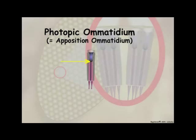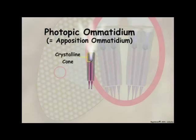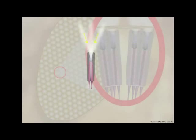In photopic ommatidia, incoming light is focused on the base of the crystalline cone and directly onto the rhabdom, the light-sensitive sensory region of the retinula cells. Light rays that enter the corneal lens at angles are absorbed by screening pigments located in the cytoplasm of the pigment cells that surround photopic ommatidia.